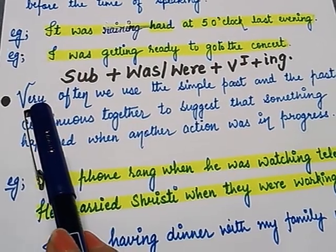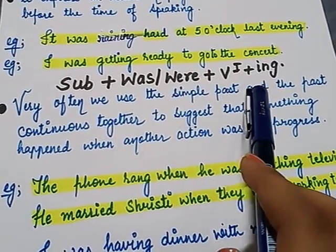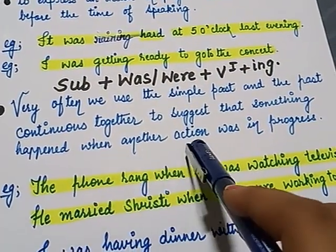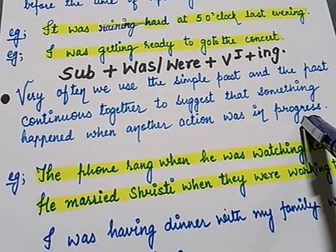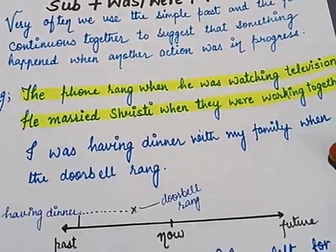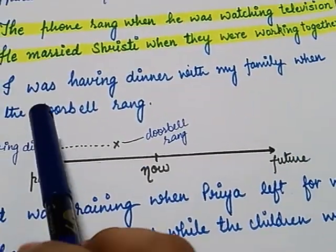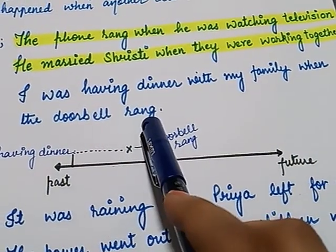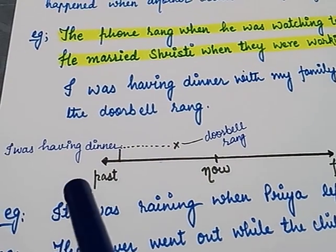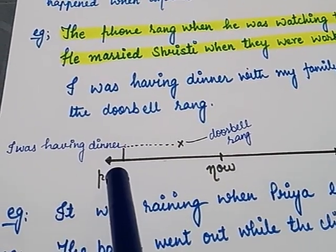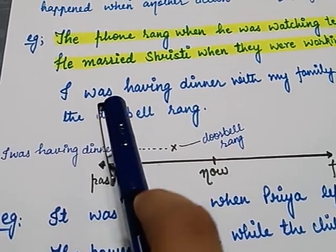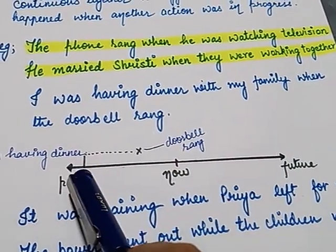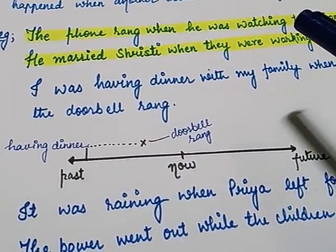Now let us see another use of past continuous tense. Very often we use the simple past and the past continuous together to suggest that something happened when another action was in progress. Let us understand this use with an example: 'I was having dinner with my family when the doorbell rang.' We are going to put this sentence on a timeline. This sentence shows an unfinished ongoing action in the past.